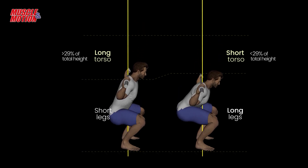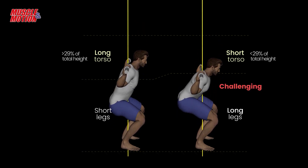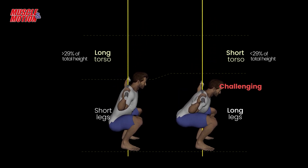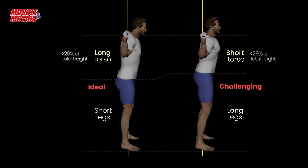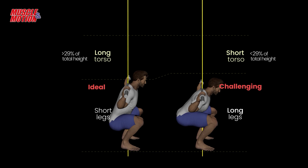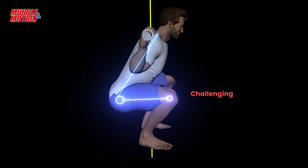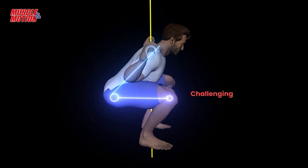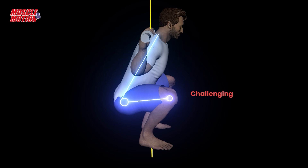A shorter torso can make it harder to stay upright. Conversely, a longer torso and short legs are an ideal body type for squatting. A challenging body structure for squatting is both a long femur and a short torso.